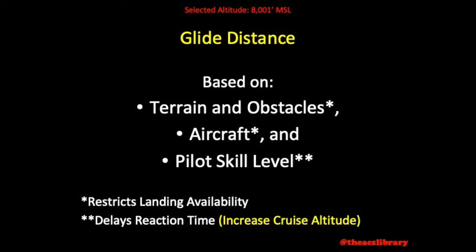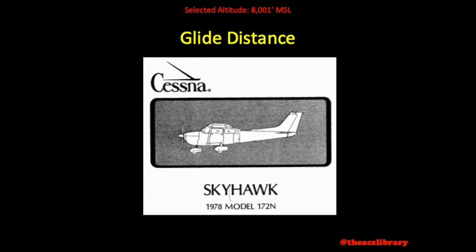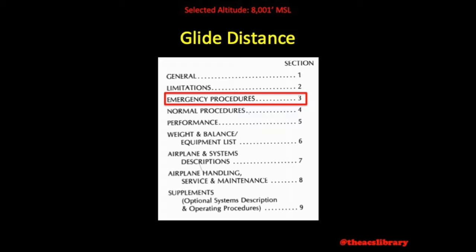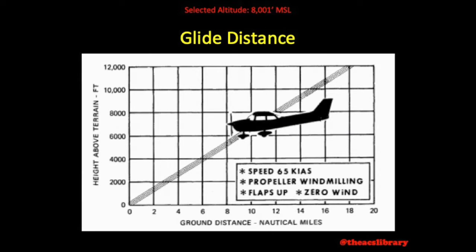Your aircraft's glide distance can be calculated using the aircraft's POH. For our example, I'll continue to use a 1978 Cessna 172 November model. Always read the notes before performing any calculations. Our glide distance is found in Section 3 of the POH, Emergency Procedures. Once we have found the glide chart and read the notes, we find that under these conditions at 4,000 feet AGL, we expect a glide distance of approximately 6 miles — or a mile and a half per thousand feet. The terrain along our route is at and below 5,000 feet and we have selected a cruising altitude of 8,001, or 3,000 feet above the surface. This translates to 4 and a half miles glide distance.